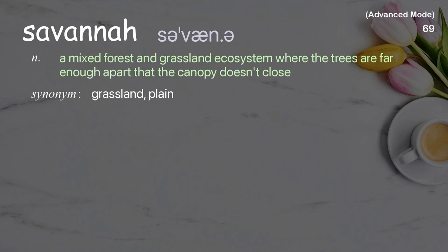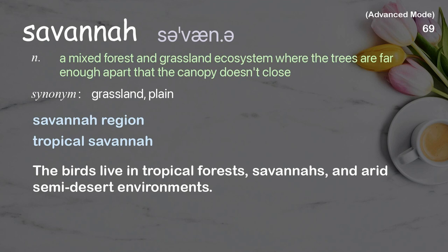Savannah: A mixed forest and grassland ecosystem where the trees are far enough apart that the canopy doesn't close. The birds live in tropical forests, savannas, and arid semi-desert environments.